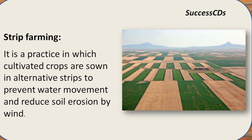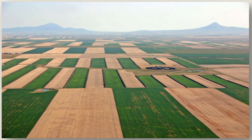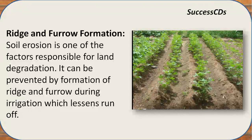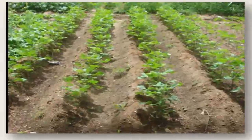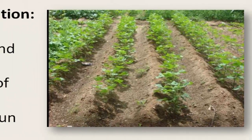Strip farming has alternative strips of cultivated and uncultivated land, as seen in the picture where the greener area is cultivated and the brown one is uncultivated. This type of farming reduces soil erosion from both water and wind sources. In ridge and furrow formation, the elevated part is the ridge and the deep part is the furrow. This formation prevents soil erosion due to water runoff during irrigation.